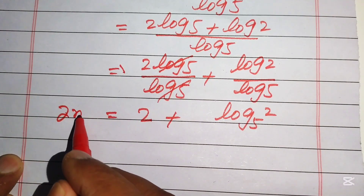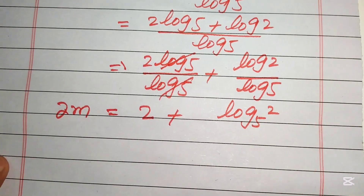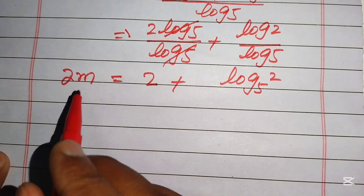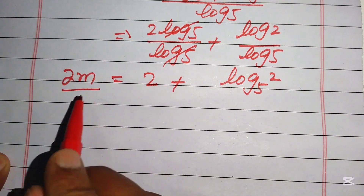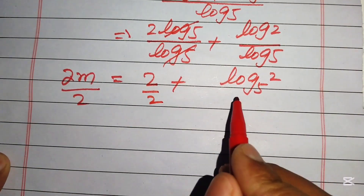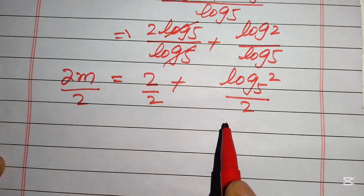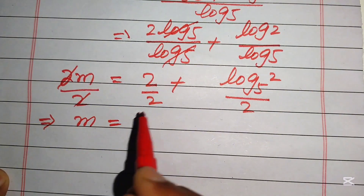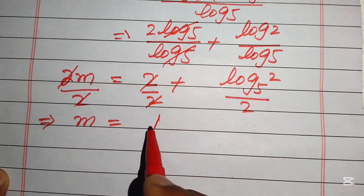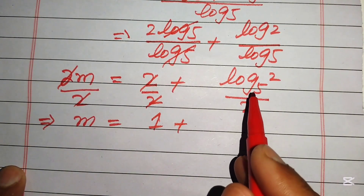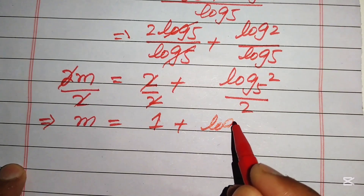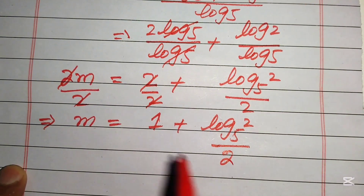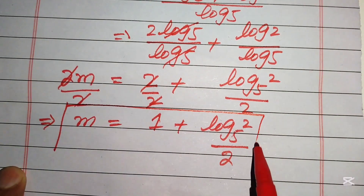We have 2m on the left-hand side, so we divide both sides by 2 to isolate m. The 2 cancels on the left, and dividing each term on the right by 2 gives m equals 1 plus log base 5 of 2, all divided by 2.